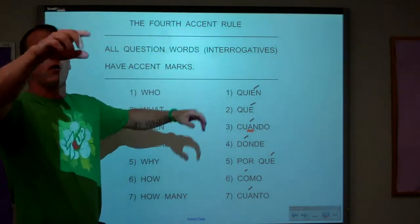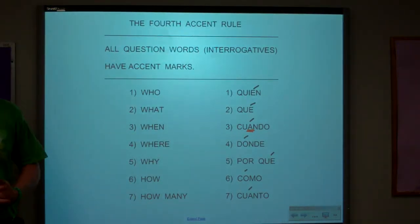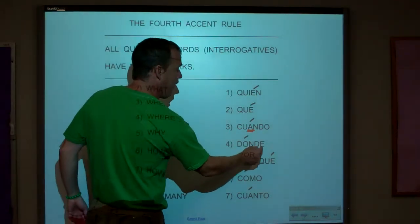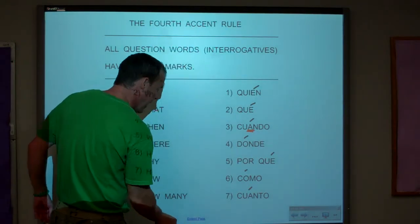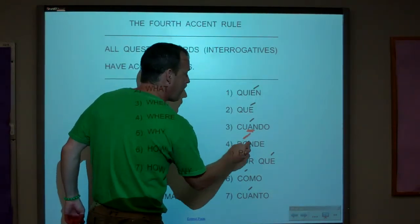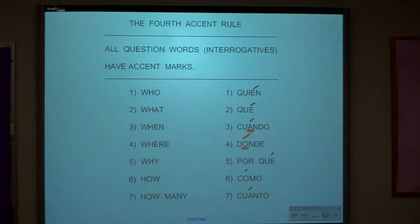So if I give you some words and there's an accent mark over the first word, you know it's a question. Dónde — where. Now, dónde ends in a vowel, so you'd expect to stress the next to last vowel, but you have an accent mark. You're telling your reader: this is a question. All question words have accents.